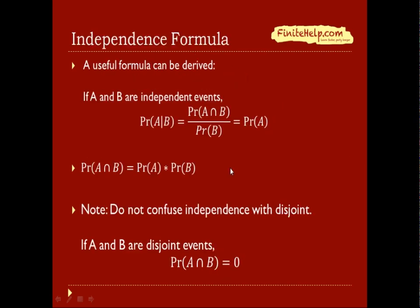So now you can derive a useful formula, because A given B is A intersect B over B. And if A and B are independent, A given B is just A, simply A, because knowing B doesn't change the probability.